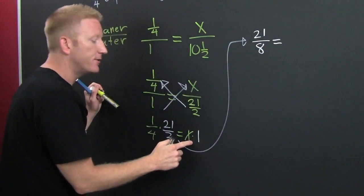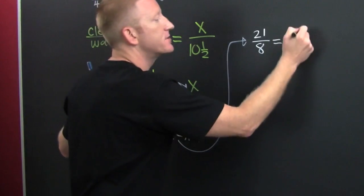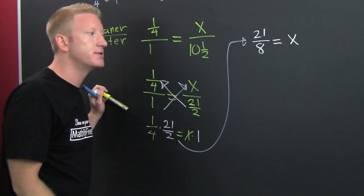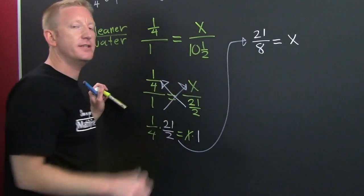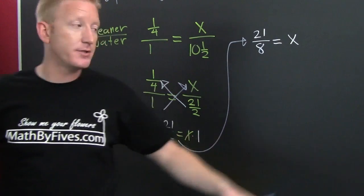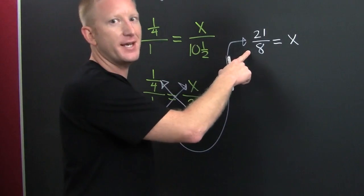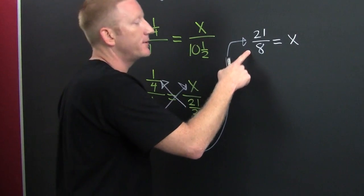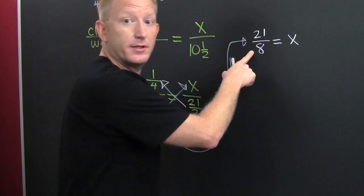And on the right side one times X is just one X with the implied one out in front. So, now wait. They gave it to you in mixed numbers so how are you going to give it back? You're going to give it back in mixed numbers. So, we need to know how much we're going to mix cleaner and water. This is the amount of cleaner.